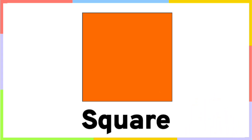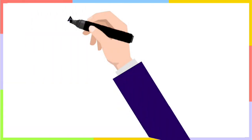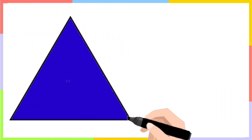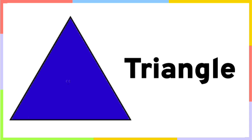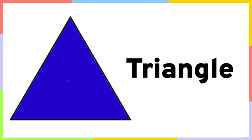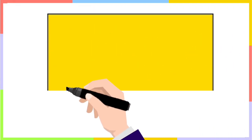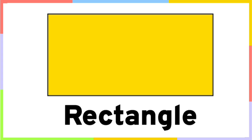Square — this is a square. Triangle — this is a triangle. Rectangle — this is a rectangle.